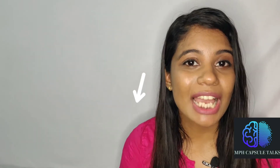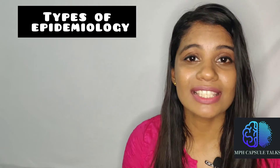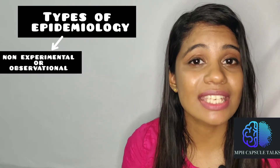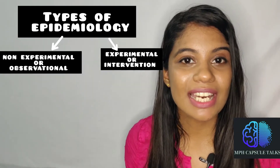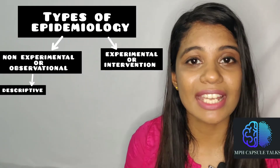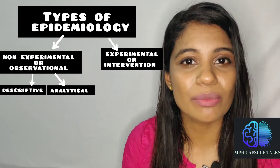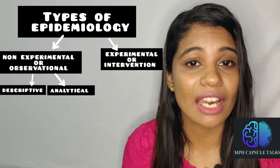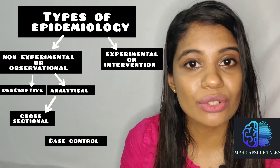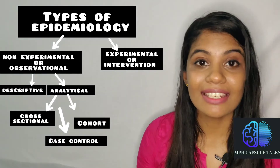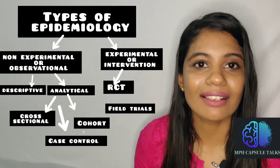Next we will talk about the types of epidemiological studies. They are mainly of two types. First is non-experimental or observational, and second is experimental or intervention studies. Under non-experimental studies, we have the descriptive and analytical study. The descriptive study explains the occurrence and distribution of a disease, whereas the analytical study includes the cross-sectional or prevalence study, the case-control study, and cohort study. In the experimental study, we have RCT or clinical trial, field trial, and community trial. We will discuss each type in separate lectures.